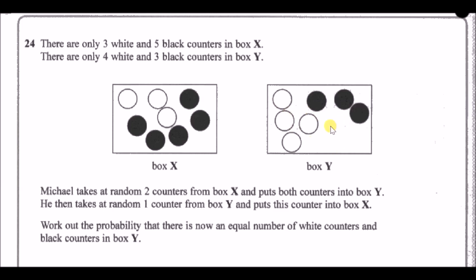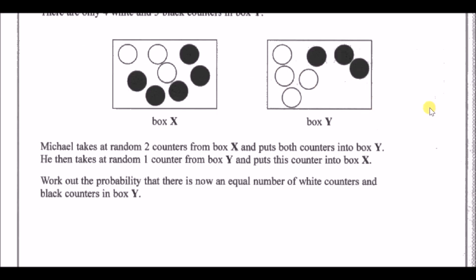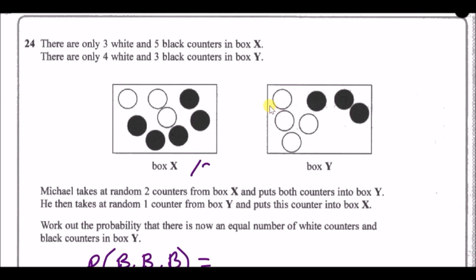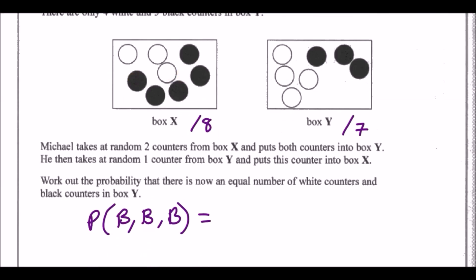Let's count carefully. One scenario: Michael takes two blacks from box X, putting them in box Y — giving box Y five blacks and four whites. He then takes one black back to X, leaving four and four equal. So that's one valid combination. The probability starts at 5/8 × 4/7 from box X, and box Y now has nine counters.